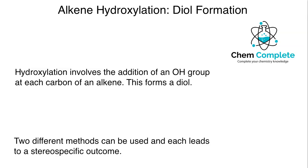Alkene hydroxylation involves alkenes and the addition of a hydroxyl or alcohol functional group to each carbon that is involved in the alkene pi bond. This forms what is called a diol. The term diol — di referring to two, and ol, O-L, is the suffix we use when discussing alcohol functional groups. So a diol is two alcohol groups.